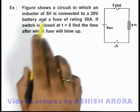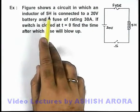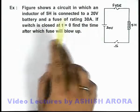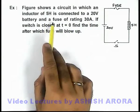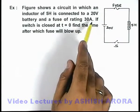In this example, figure shows a circuit in which an inductor of 5 henry is connected to a 20 volt battery and with a fuse of rating 30 ampere.